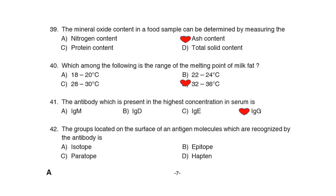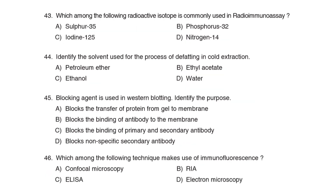41st Question: The antibody present in the highest concentration in serum is Correct Answer: Option D: Immunoglobulin G. 42nd Question: The groups located on the surface of an antigen molecule which are recognized by antibodies is Correct Answer: Option B: Epitope. 43rd Question: Which among the following radioactive isotopes is commonly used in radioimmunoassay? Correct Answer: Option C: Iodine-125. 44th Question: Identify the solvent used for the process of defatting in cold extraction. Correct Answer: Option A: Petroleum ether.